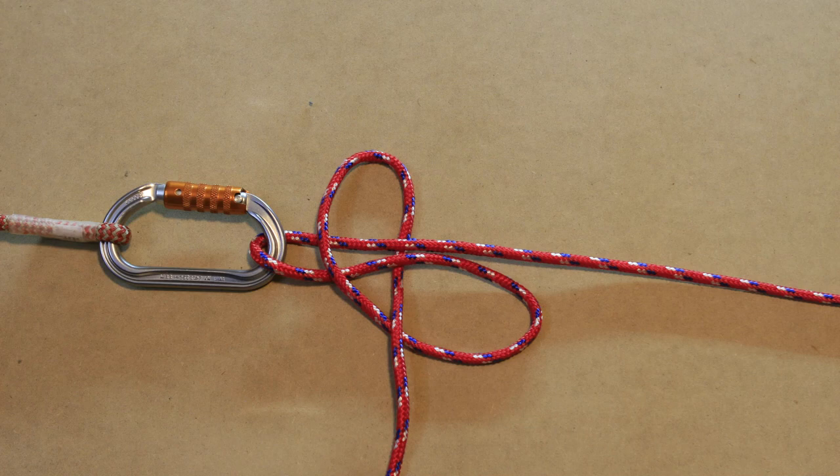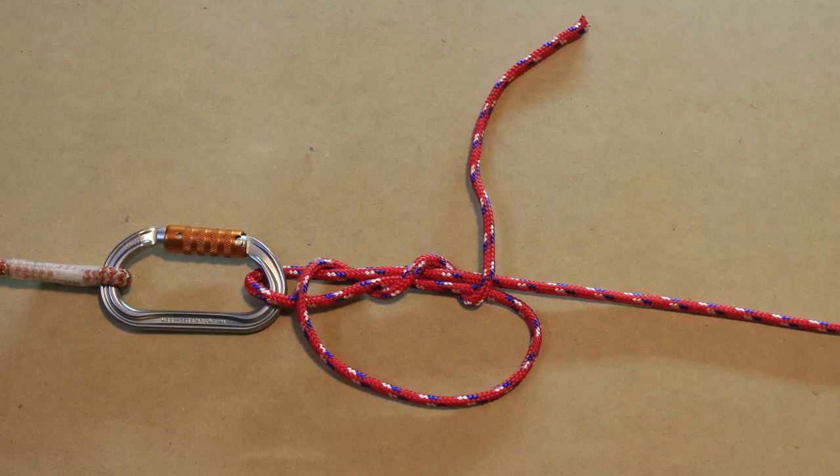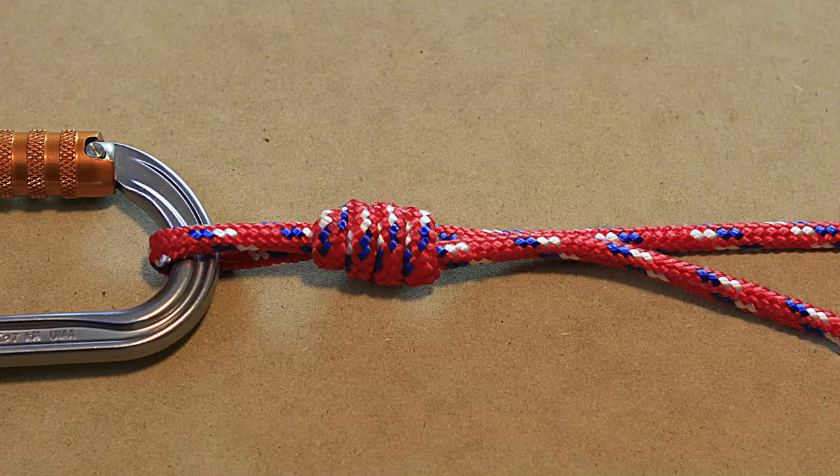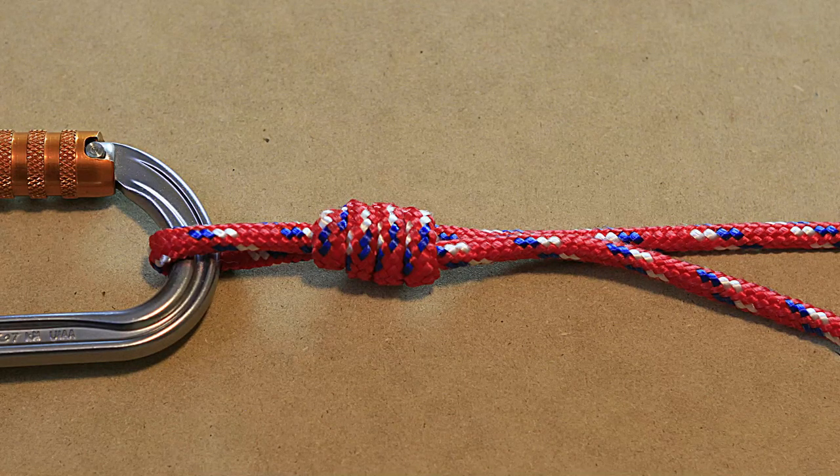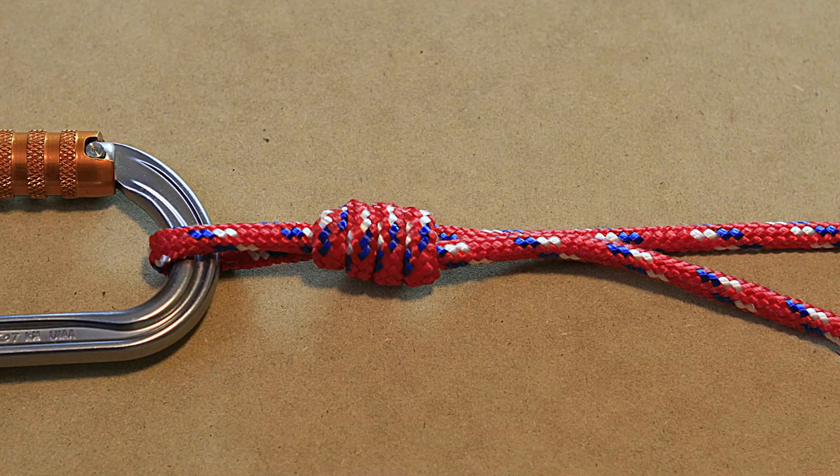The uni knot is an ideal knot when it comes to fishing. You can use this knot to attach hooks, swivels and lures to a fishing line. The uni knot is also known as the Duncan Loop knot and the Grinner knot.